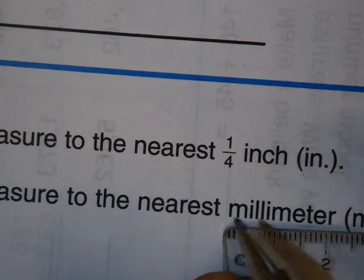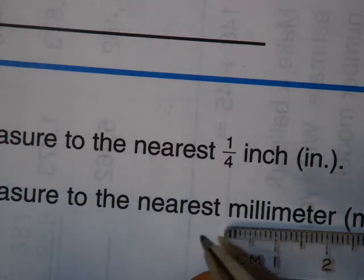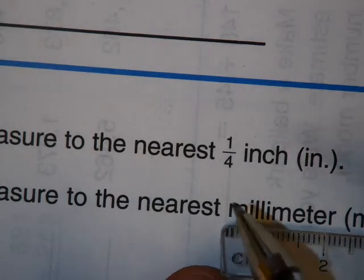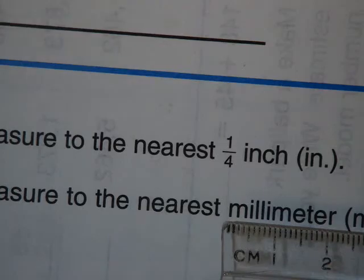See how there's all these little tick marks inside there? There's ten of those little tick marks inside a centimeter, and that's what makes a millimeter. So you have to count those to measure that.